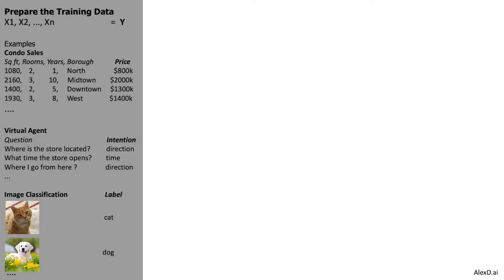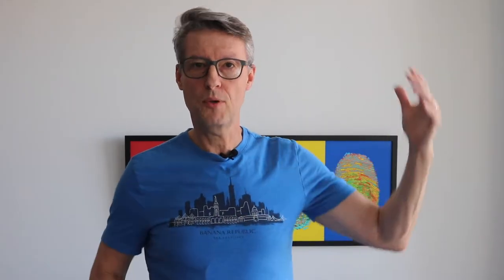A third example is image classification. You have images of cats and dogs, and you want to build a model that can classify new pictures as either a cat or a dog. This image data is your training data.